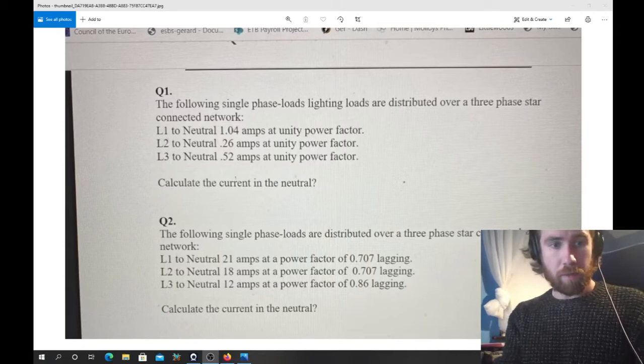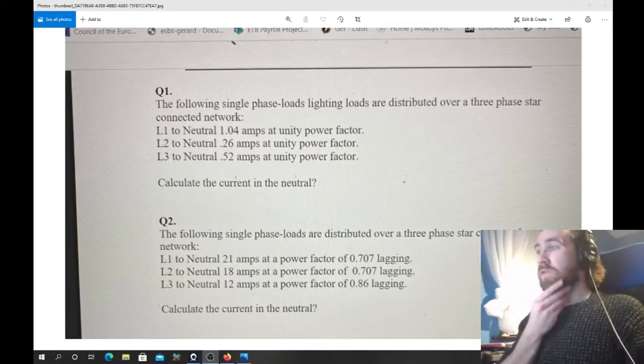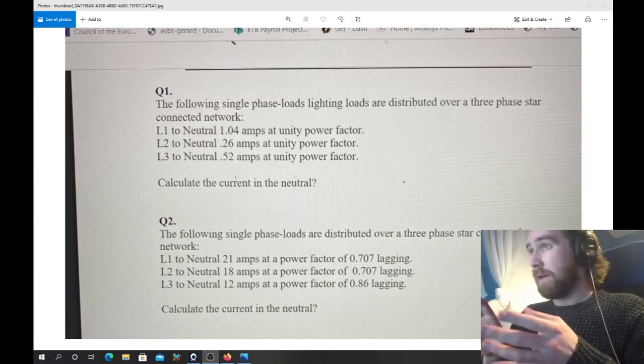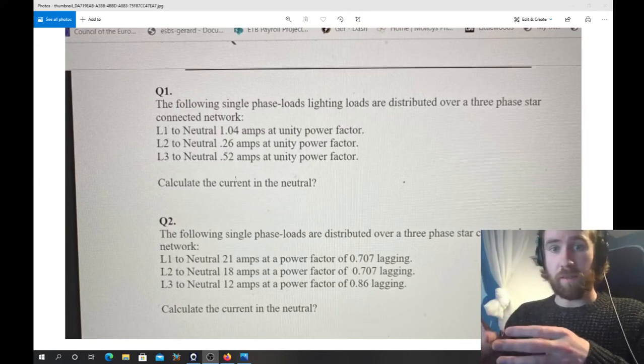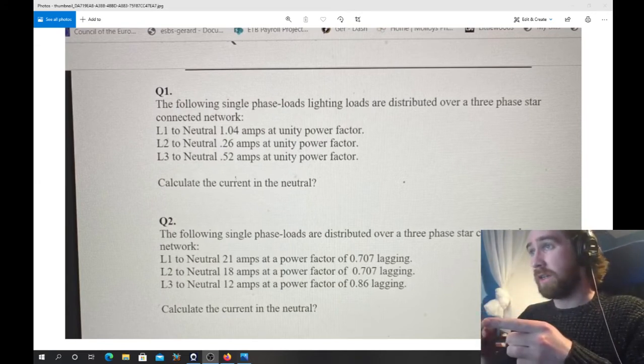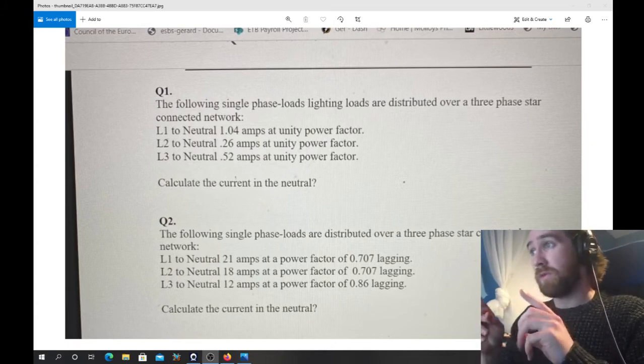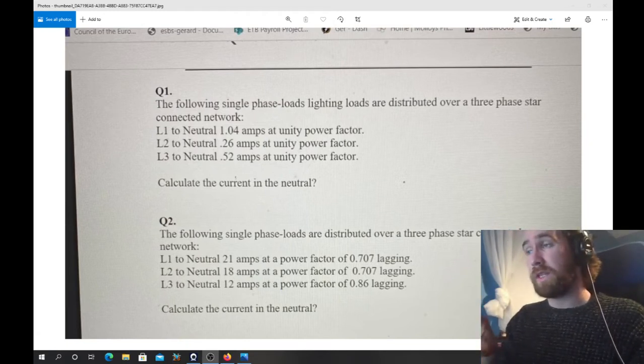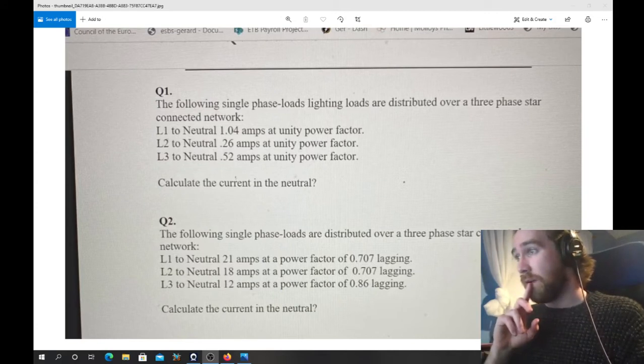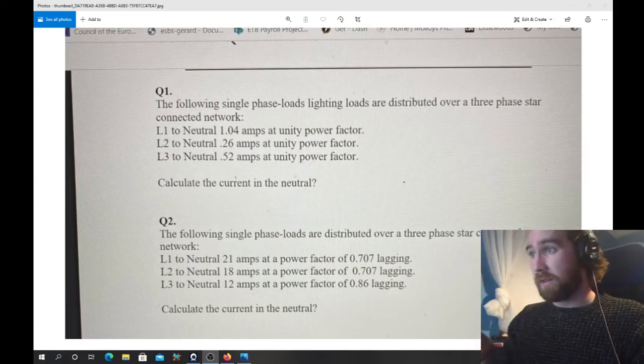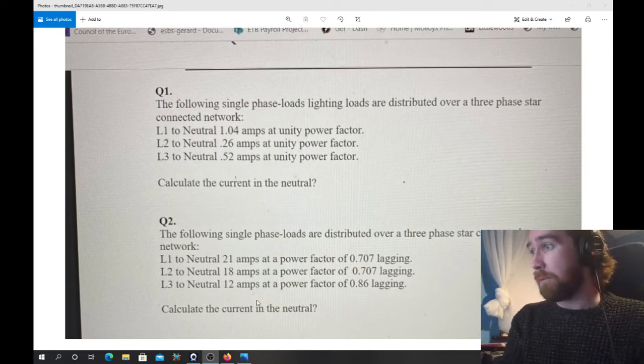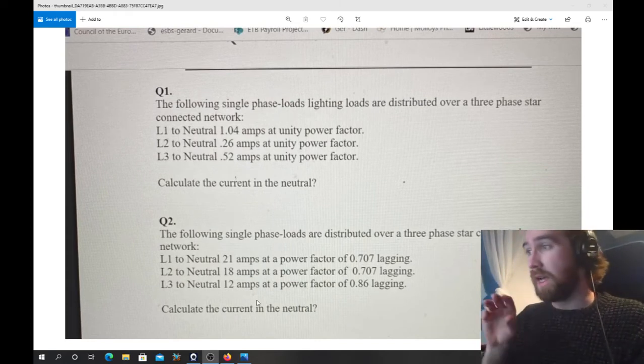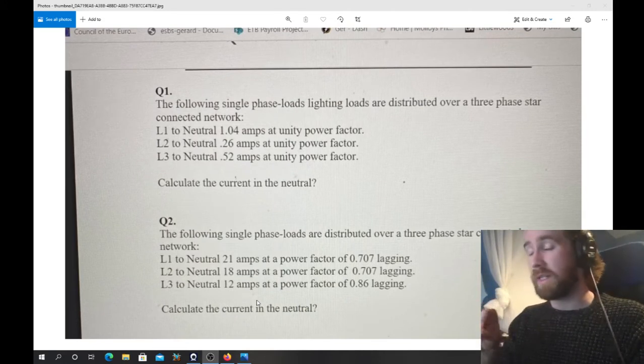I was asked a question about how to approach calculating the neutral current in a star-connected system by a student, and they had tackled the first question you see on the screen here with three line currents all at unity power factor. This is similar to a question we covered in class. In fact, it's the exact same question except the values of the current are slightly different. And the student in question approached the second question here, but they made a slight mistake in their approach, although it's only a small mistake.